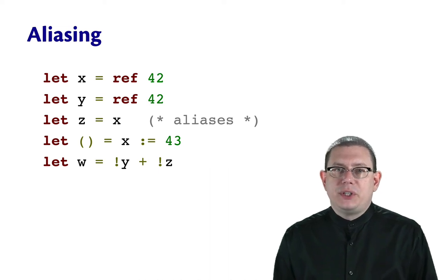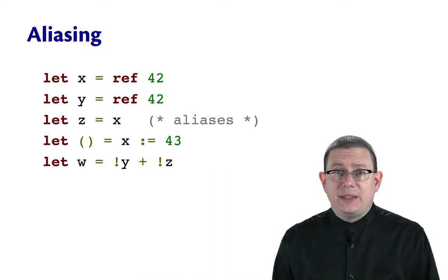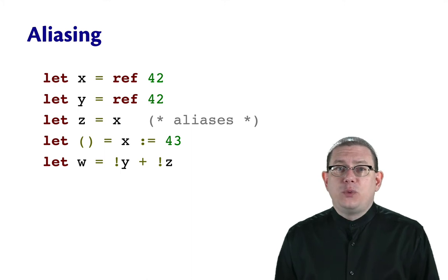Now that we have references, we can have aliasing. Aliasing is when two references point to the same location in memory.